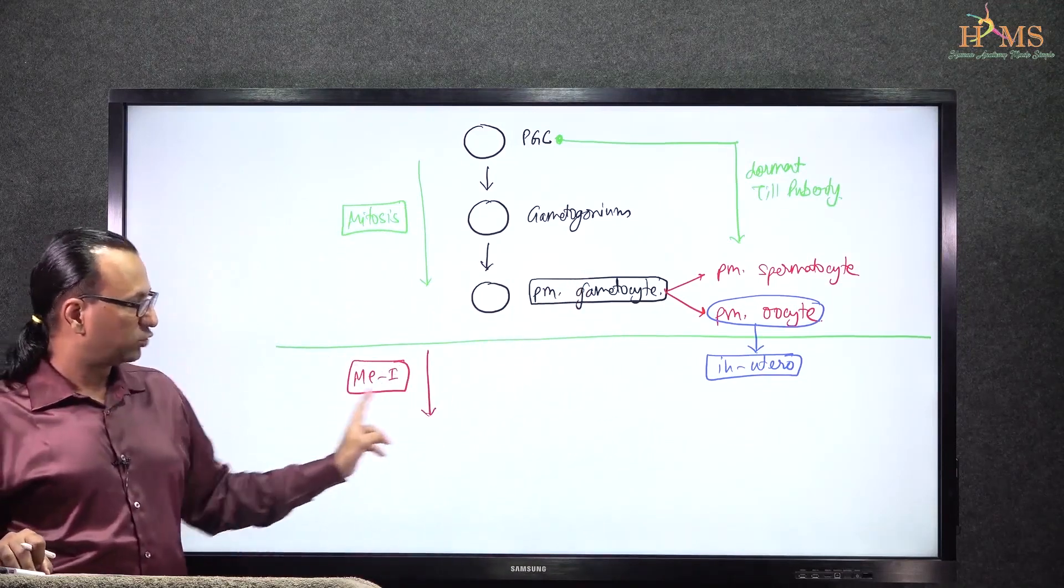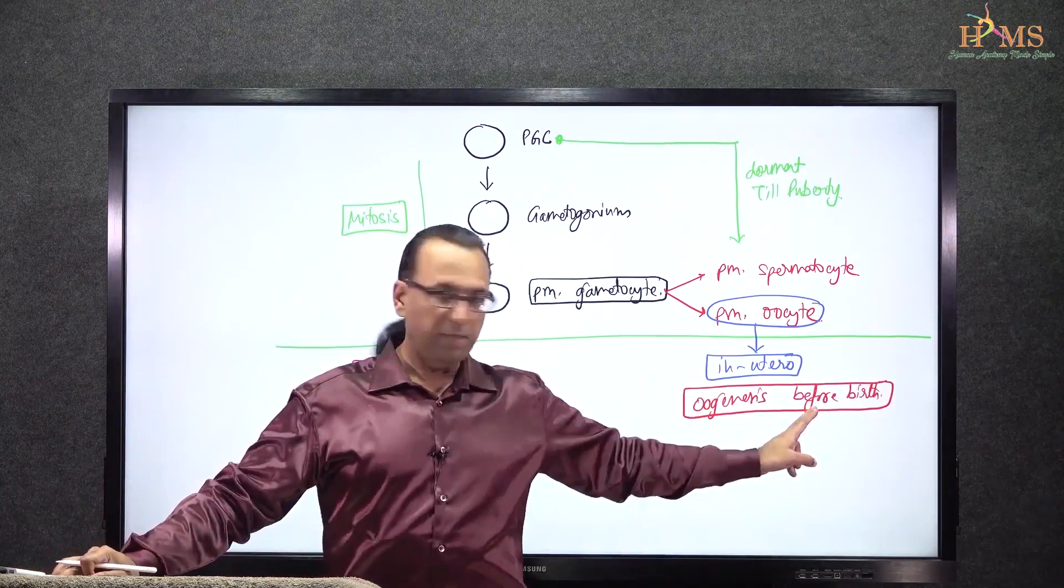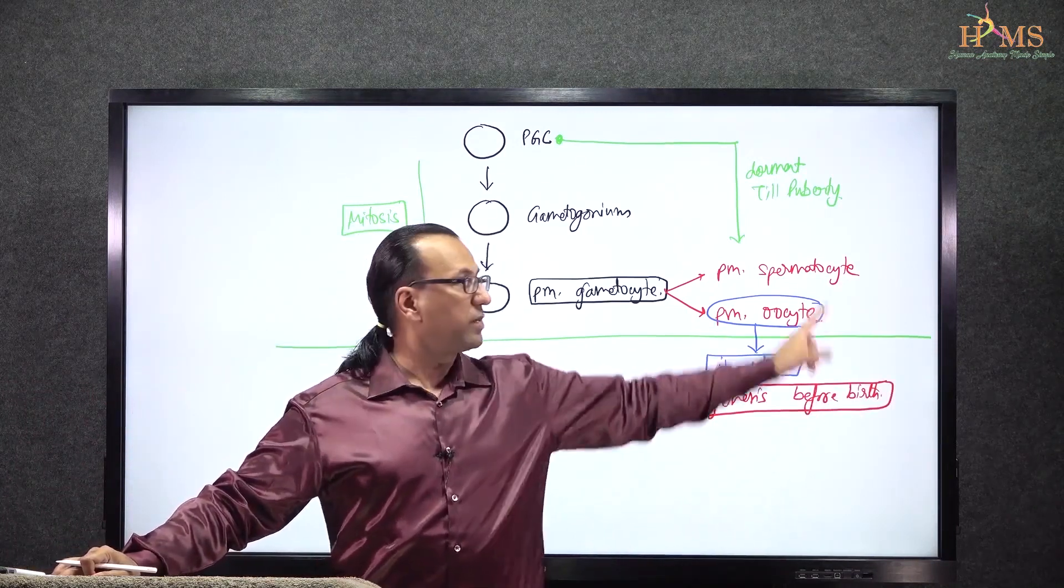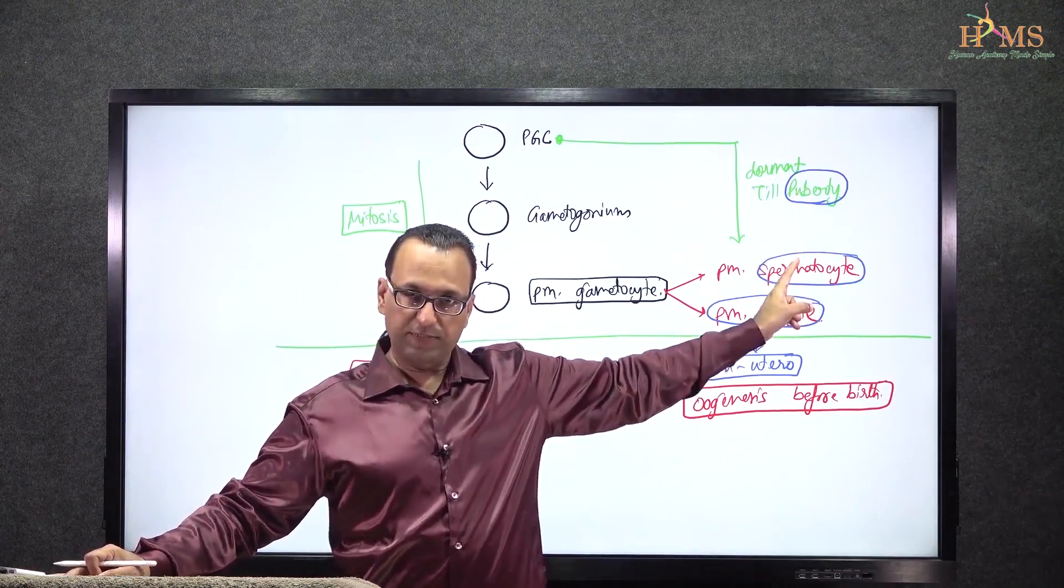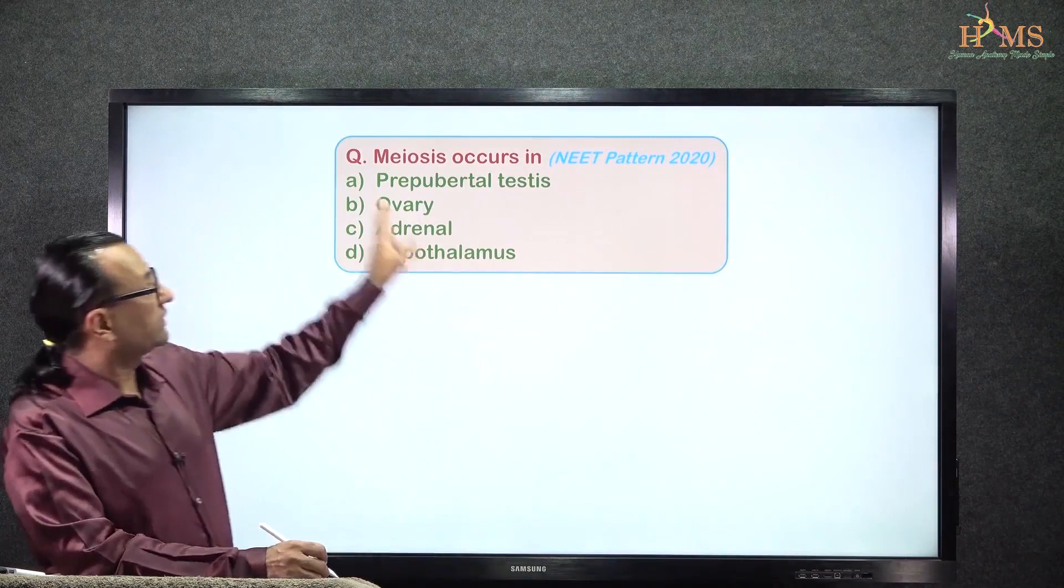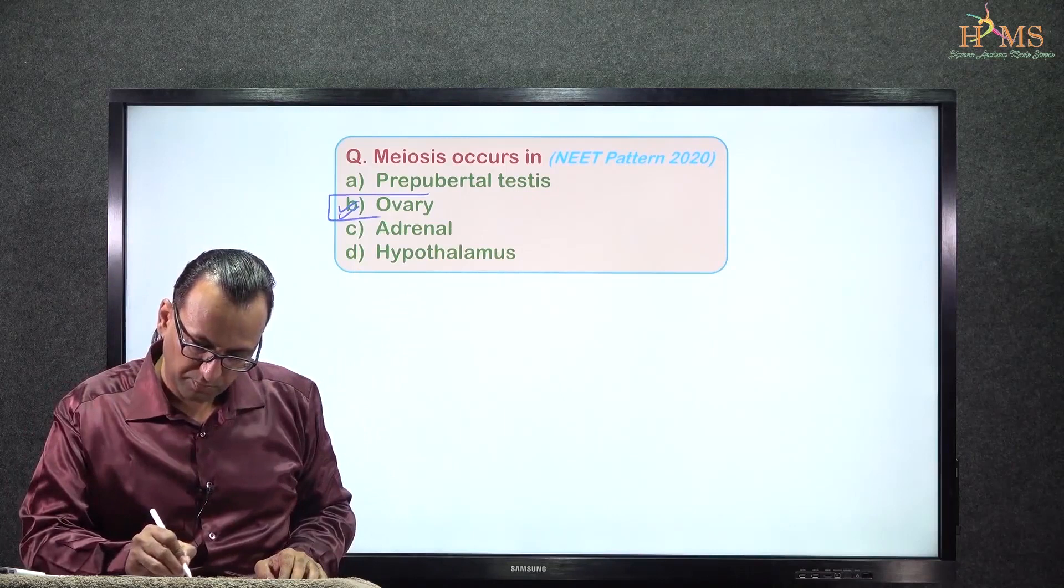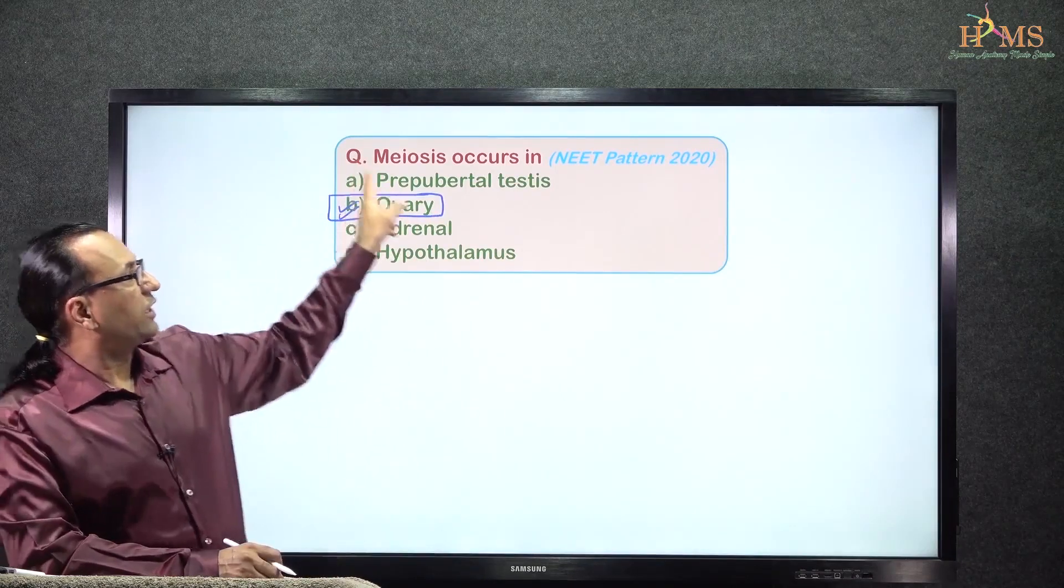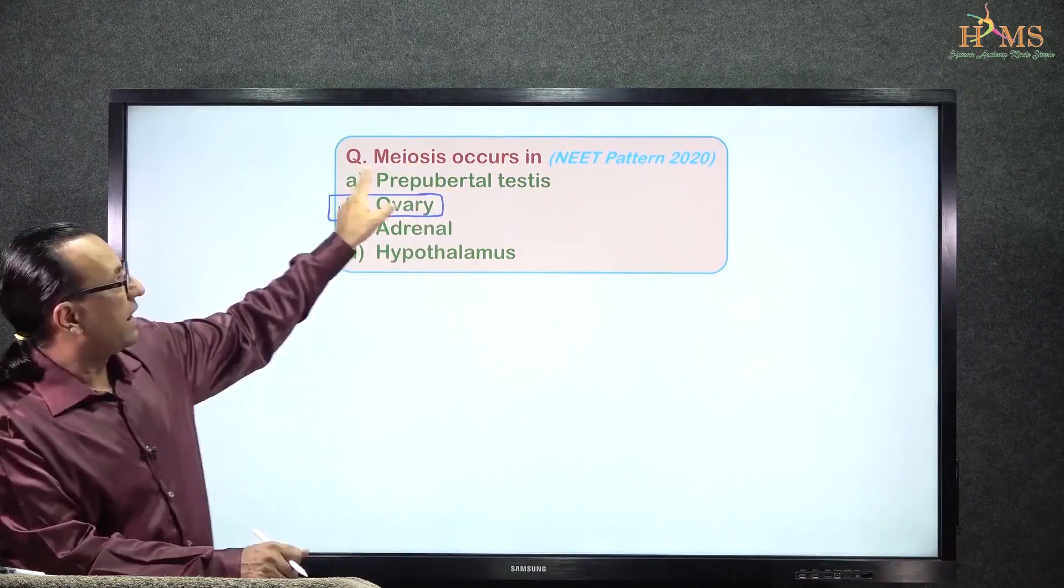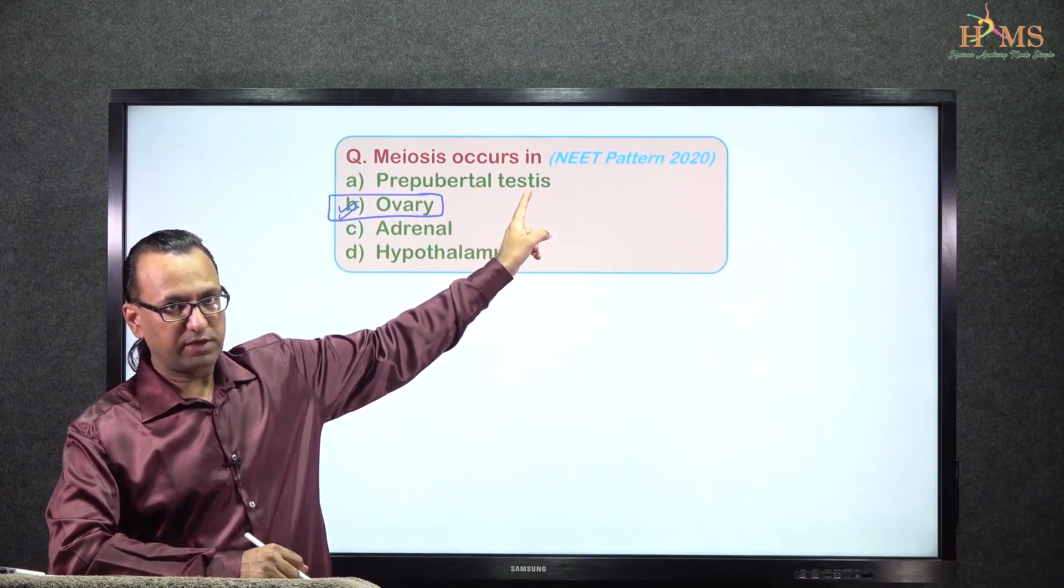Oogenesis begins before birth, whereas spermatogenesis begins after puberty. Let us go back to the question then. This was our question asking where meiosis occurs, and we can very well mark our answer as the ovary—choice B should be our answer here, as meiosis occurs only in the gonads, and in male gonads it will begin only after puberty is achieved.